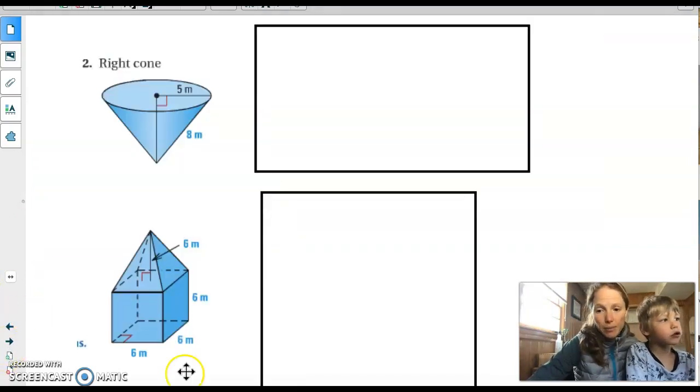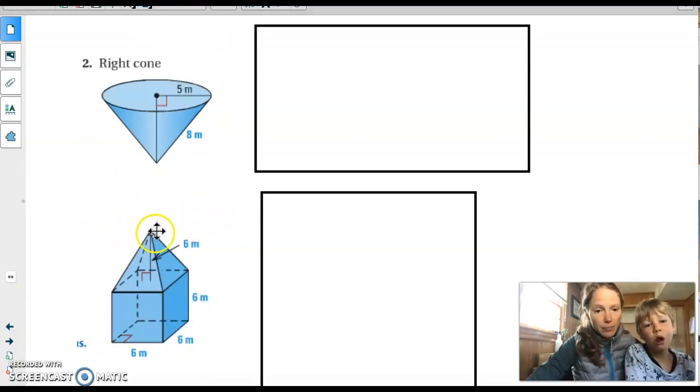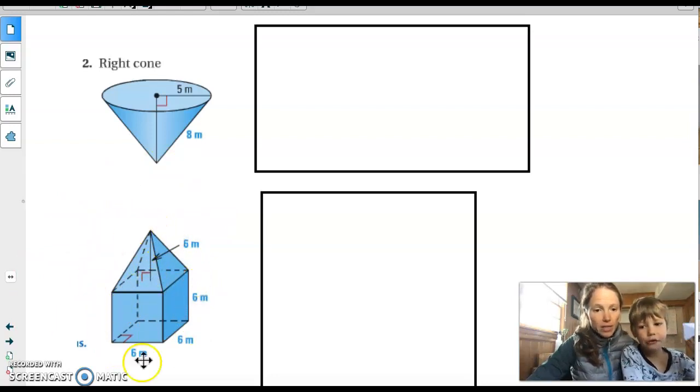Okay, so here's a couple more for you to try. This is a cone, and then this is another composite shape. So we have a pyramid on top of a cube. So try these two, and then we will go from there.